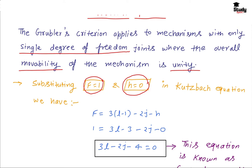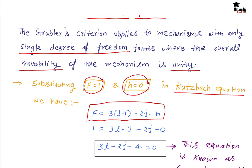So if we put f equals to 1 and h equals to 0 in the Kurzweck equation — as we all know, the Kurzweck equation is: f = 3l − 1 − 2j − h. If we put f = 1 and h = 0, we get 3l − 2j − 4 = 0, and this equation is known as Gruebler's equation.